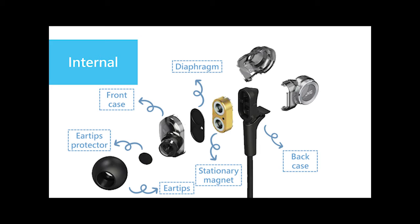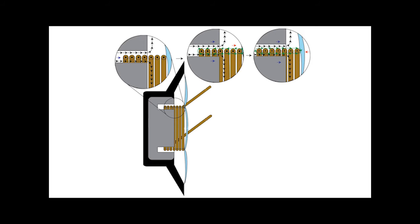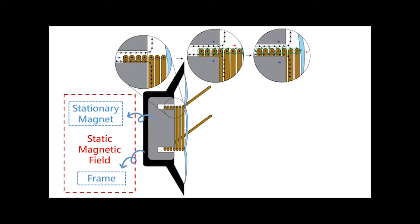The principle of operation about earphones is similar with the electric loudspeaker. You can see the picture. A stationary magnet is fixed to the frame of the earphone which sets up a static magnetic field. And there is a voice coil suspended in the magnetic field attached to a diaphragm.